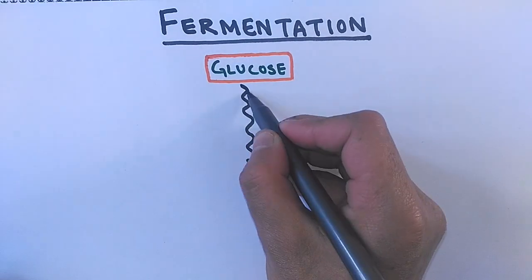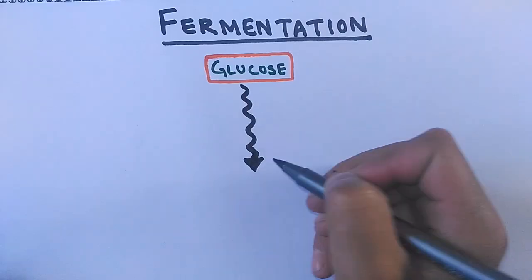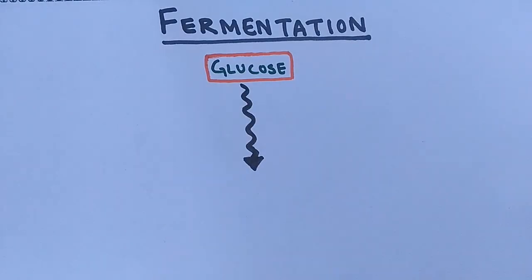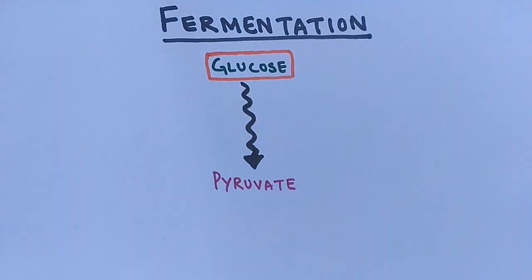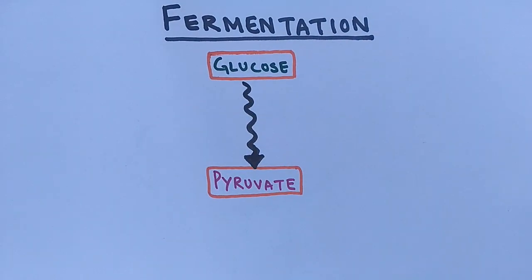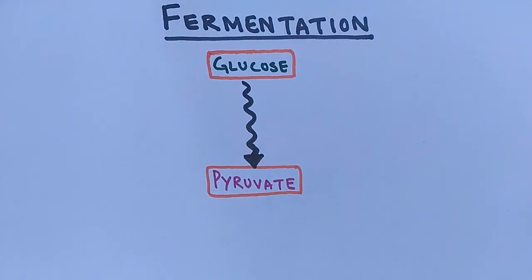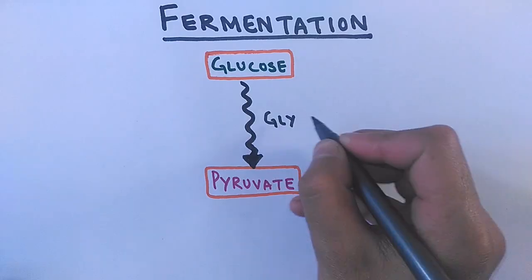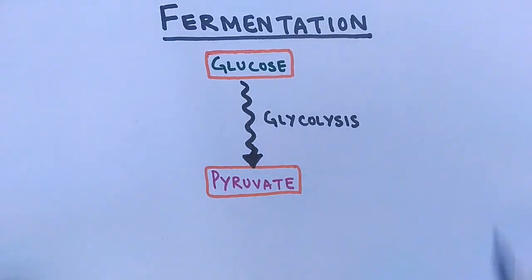The glucose molecule is first converted through a series of biochemical reactions to a pyruvate molecule, also called pyruvic acid. The whole process from glucose to pyruvic acid is referred to as glycolysis, and this glycolysis occurs in the cytosol, as all the enzymes that drive glycolysis are present there.